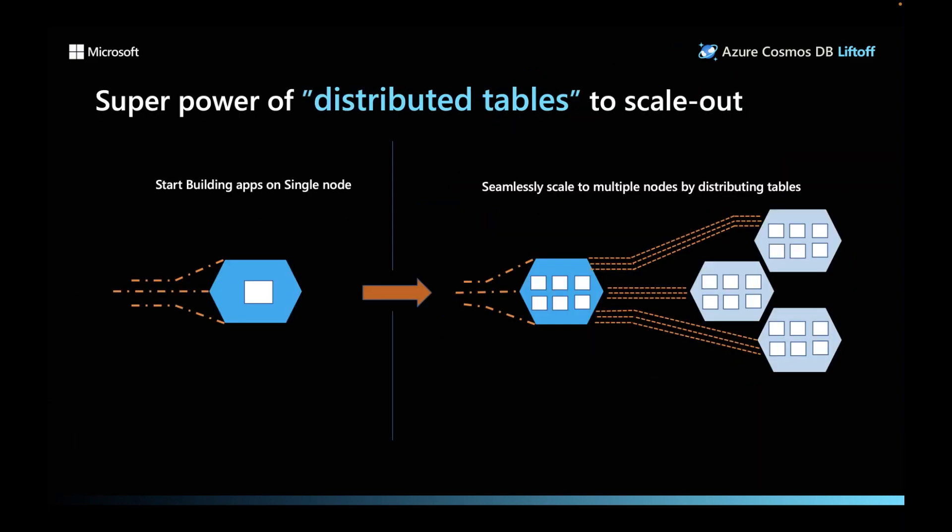To achieve distributed scale, Azure Cosmos DB for Postgres extends Postgres with the superpower of distributed tables. You can start small by building your apps on a single node, the same way you would with Postgres. As your apps scale and performance requirements grow, you can seamlessly scale to multiple nodes by transparently distributing your tables.